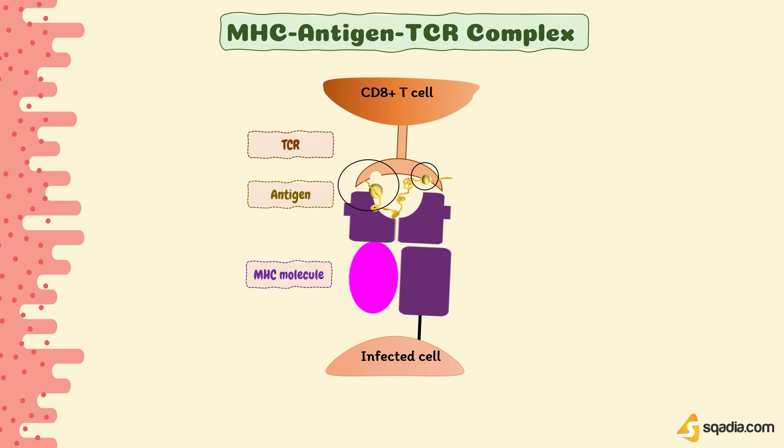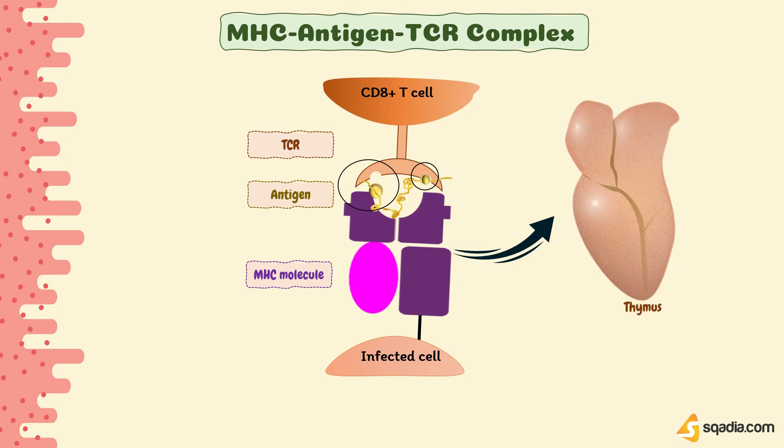The repertoire of TCRs that is selected during development in the thymus depends on interaction with MHC molecules — that is, T cells learn self-MHC in the thymus during development. Those that cannot bind appropriately to self-MHC molecules are eliminated or made anergic. This also helps to explain the phenomenon of MHC restriction: why T cell receptors are specific for self-MHC.